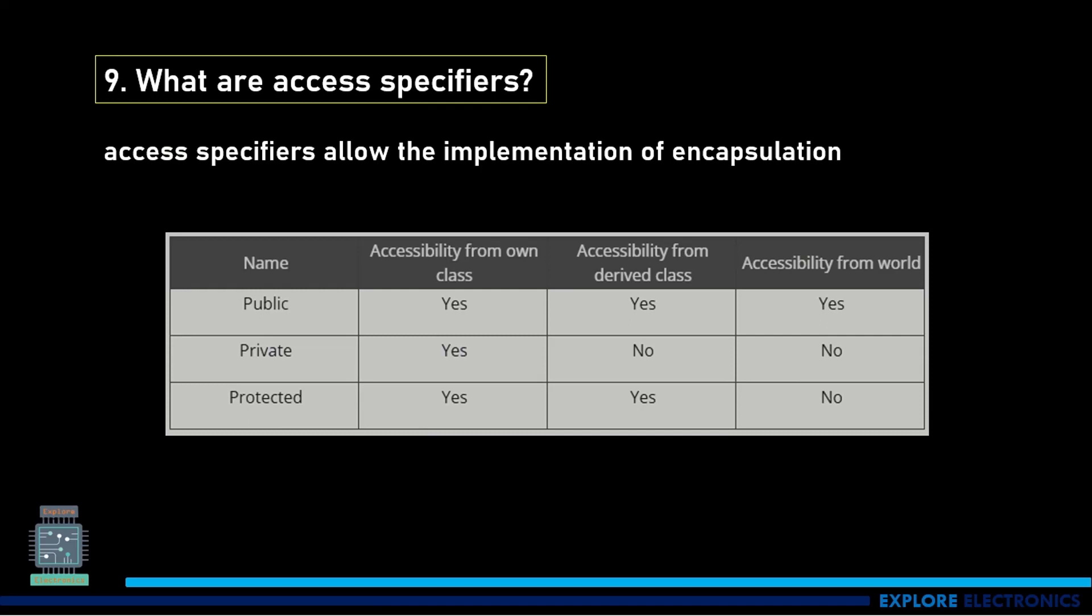Public gets accessibility from its own class, from the derived class, and can be accessible from the outside world. But if it is private, there is no accessibility given from the derived classes and no accessibility to the outside world. Protected will get accessibility from the own class and from the derived class, but not from the external world.